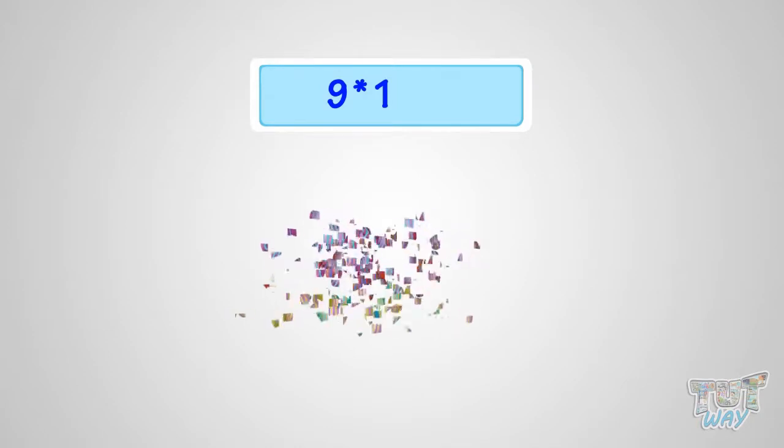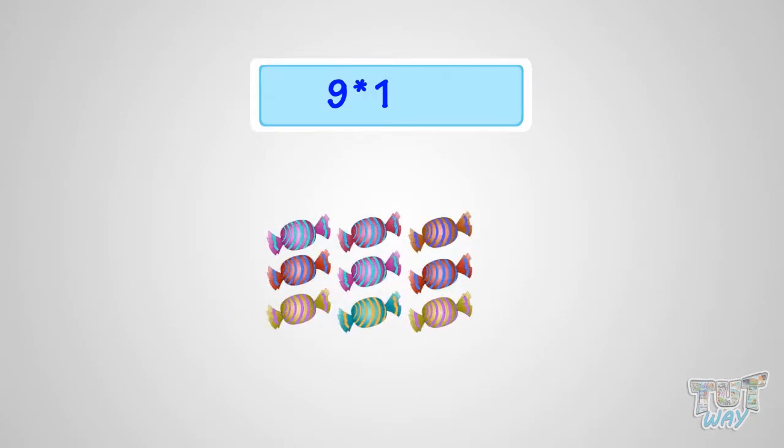What is 9 multiplied with 1? It is same as one set of 9 candies. So, it is 9 candies. That is, 9 multiplied by 1 is 9.